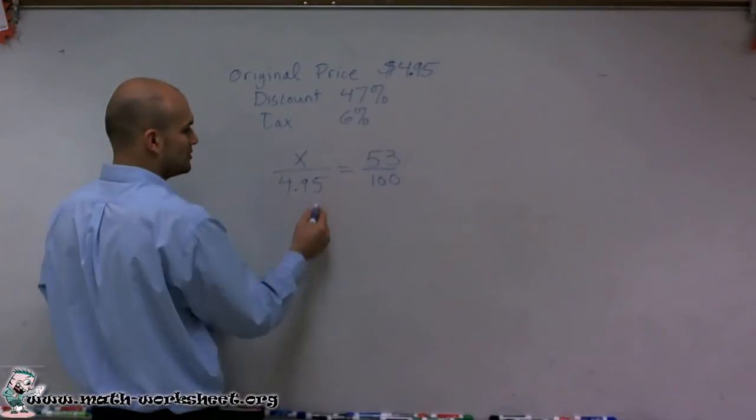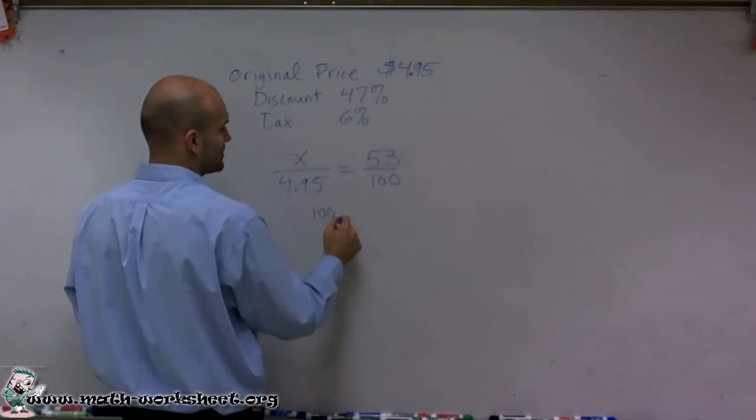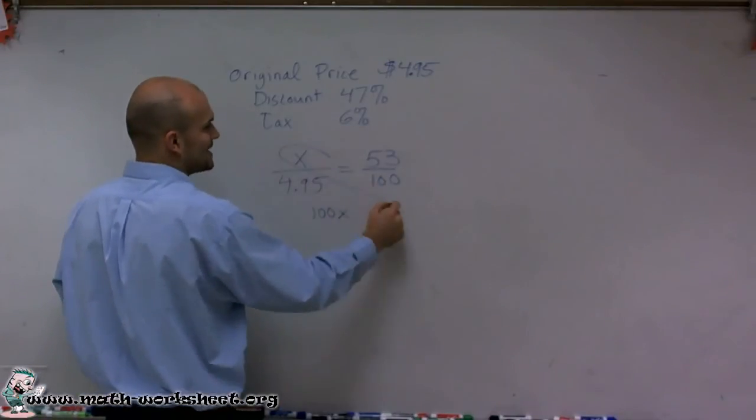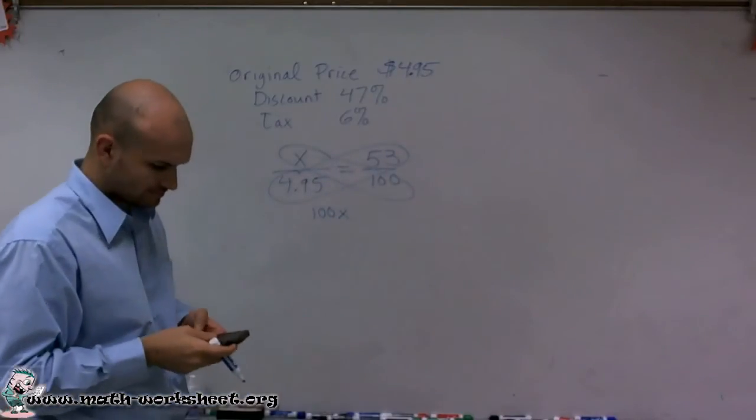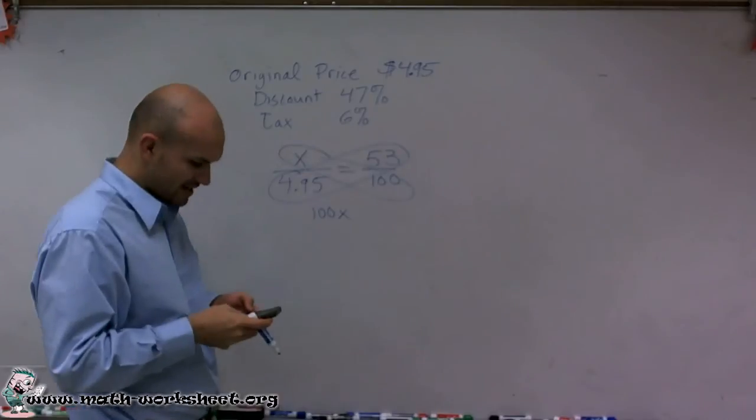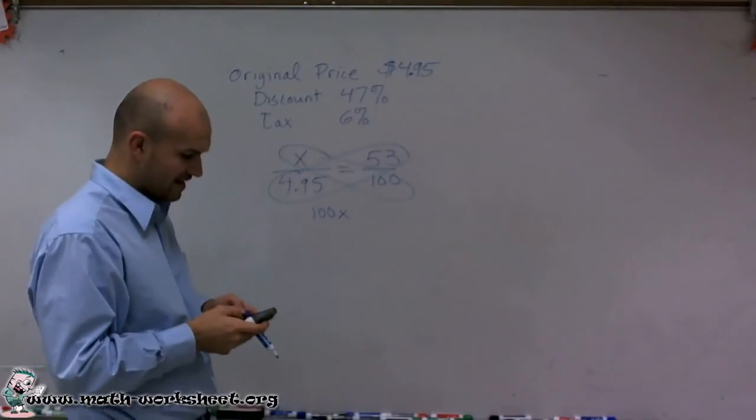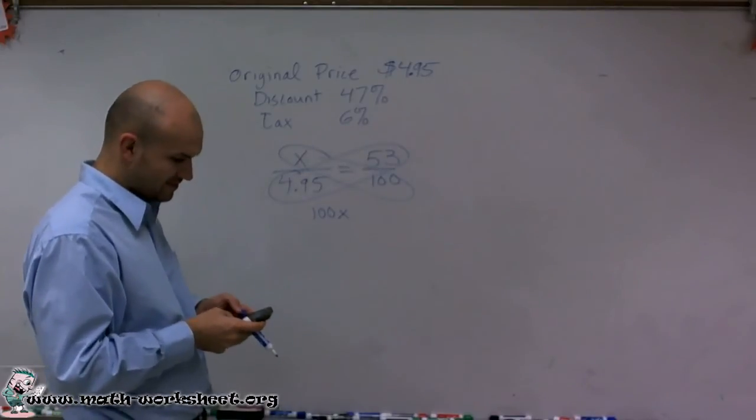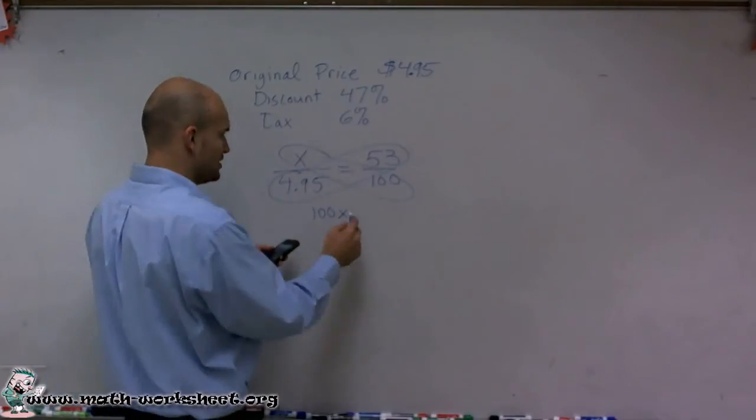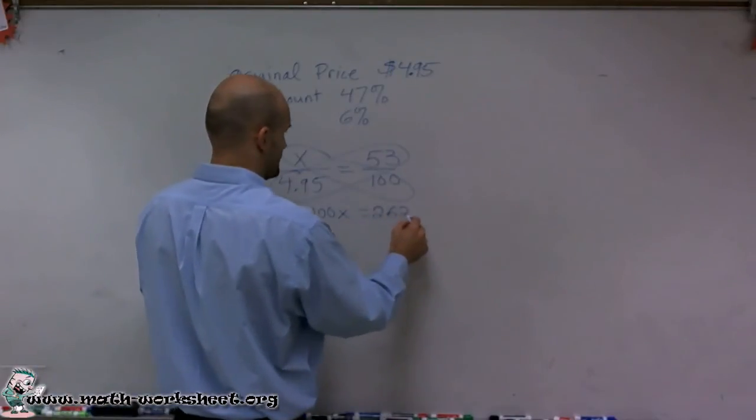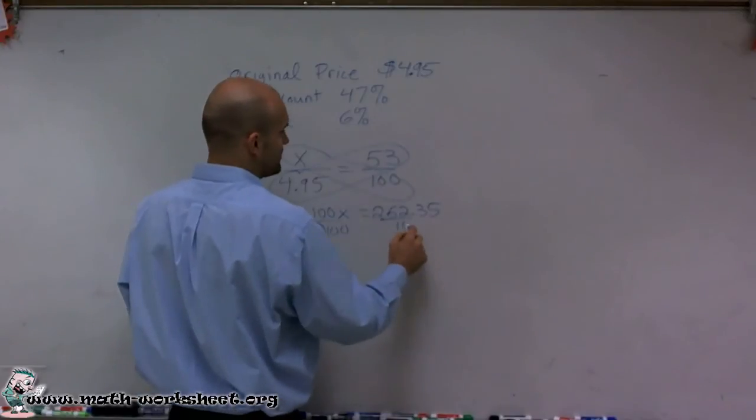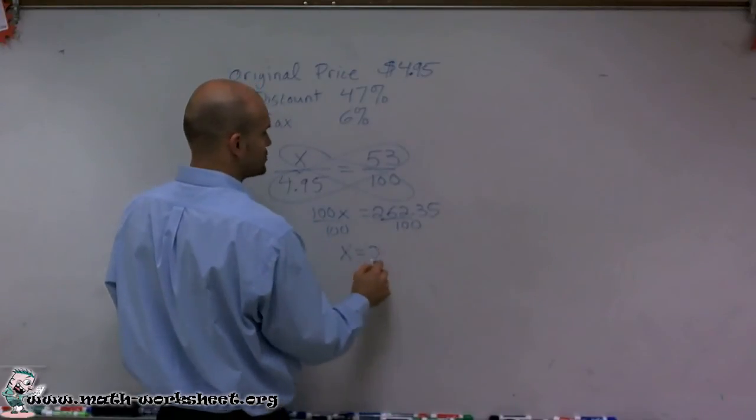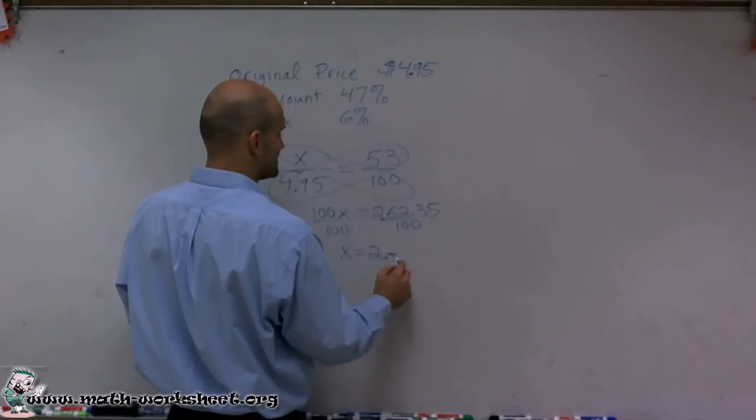So then what I can do is use cross multiplication. I'm going to multiply 100 times X and then 4.95 times 53. And when I do that, I get 4.95 times 53 equals 262.35, divide by 100, and I get X equals $2.62.